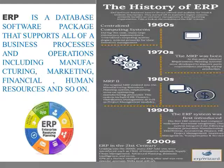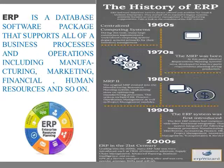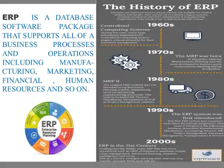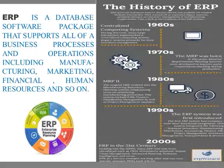In the 1980s, MRP II — Manufacturing Resource Planning — emerged. In that system, they mainly focused on manufacturing processes. It also included HR, finance, distribution management and project management.